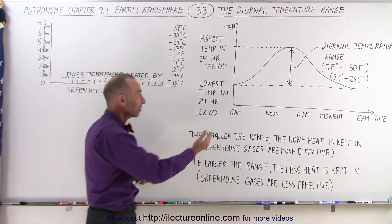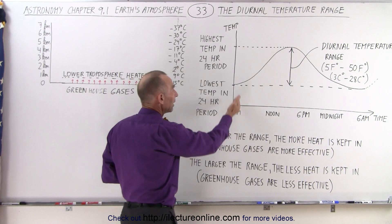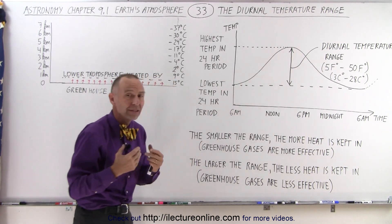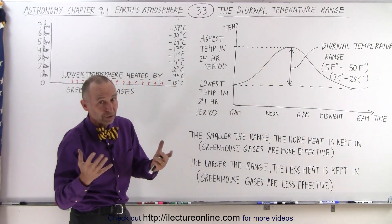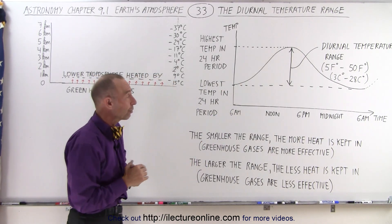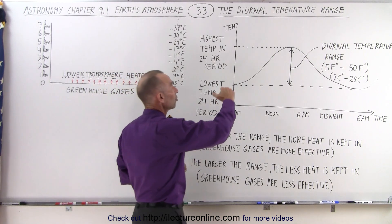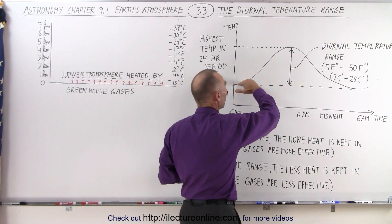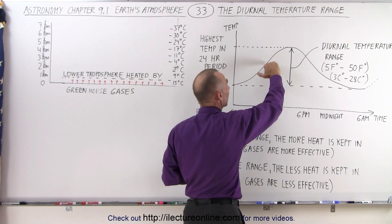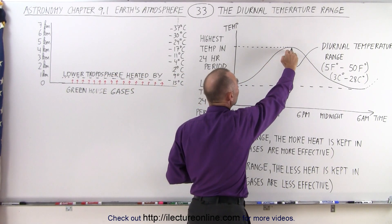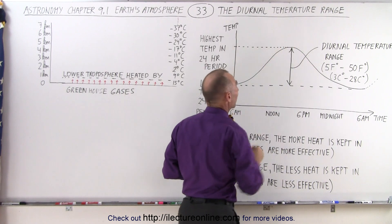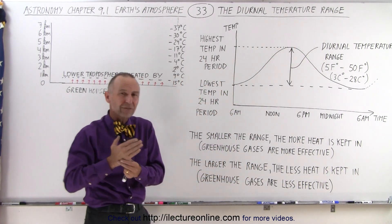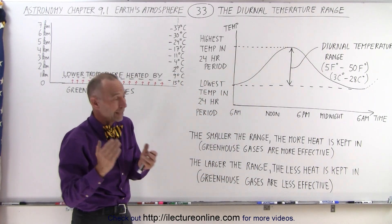So typically, 6 o'clock in the morning is about the coldest time of the day — depends upon summer or winter of course — and then once the sun begins to shine, the temperature begins to go up higher and higher and higher, and eventually we reach a maximum temperature for the day. That's typically past the noon hour.